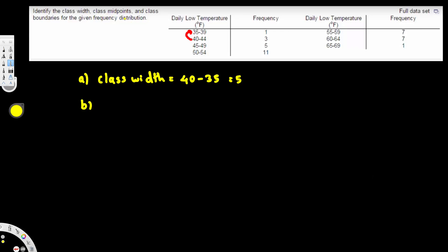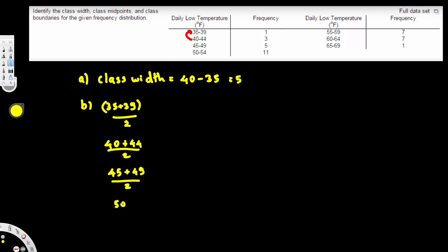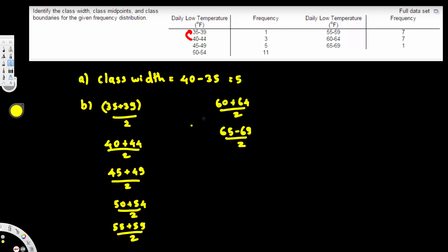Now let's go to part B, which is asking for the class midpoints. To find the class midpoints, we add the two class limits together and divide by 2. For example, the first one is going to be 35 plus 39 divided by 2. The second one is 40 plus 44 divided by 2, then 45 plus 49 divided by 2, then 50 plus 54 divided by 2, then 55 plus 59 divided by 2, and then 60 plus 64 divided by 2, and 65 plus 69 divided by 2.